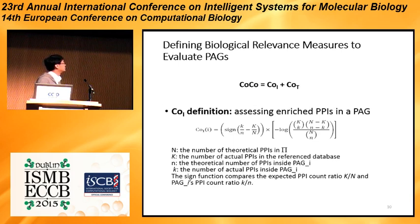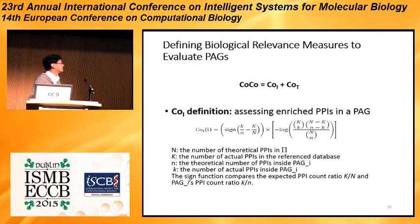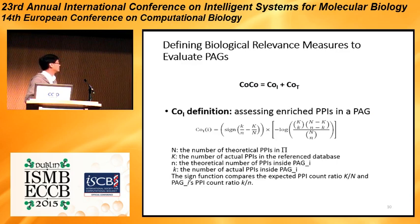To define biological relevance, we use a measure called COCO, which has two parts: COI and COT. COI assesses enriched protein-protein interactions (PPIs) — the interactions within the pack. COT looks at triangles formed by PPIs. The formula uses the hypergeometric distribution probability density. You plug in the theoretical PPIs, the actual PPIs found in the database, and the theoretical and actual number of interactions inside a pack to calculate the probability density. We take a negative log to make it nicely scaled, and the sign indicates whether it's over- or under-representation.